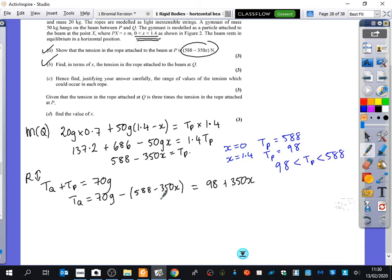and 588. And you can do the same thing for TQ, and it's the same thing. You get 98 and 588. And that's all because x is allowed to be between 0 and 1.4. You're looking at what's the extreme values that you can get of the tension.